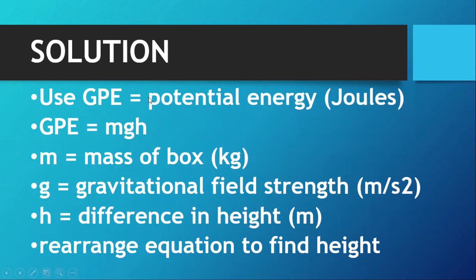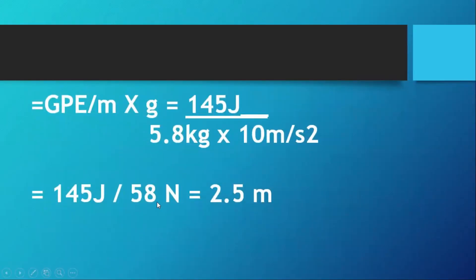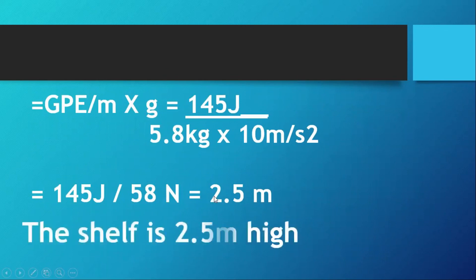Recall the units: joules for GPE, kilograms for mass, m/s² for gravity, and meters for height. Since height is the unknown, use the formula: divide the GPE by the product of mass and gravity. Multiply 5.8 kg by 10 m/s² to get 58 N. Then divide 145 joules by 58 N, giving a height of 2.5 meters. The shelf is 2.5 meters high.